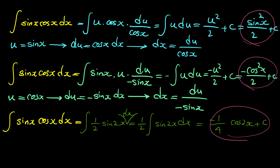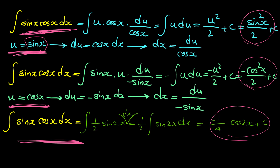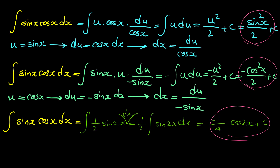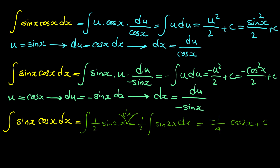So the result from the third method is negative one fourth cosine of 2x plus C. Now I want to show you that all three answers are exactly the same — they seem different at first, but no matter which method you use, if you do the steps correctly, the answers are always the same.